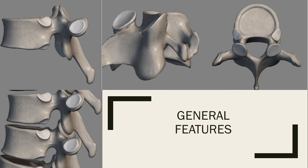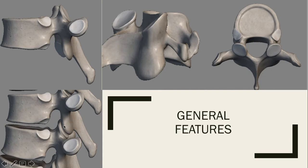Now the superior vertebral notch — just like the inferior, we have the superior vertebral notch. If you were just to isolate it, it's just this little section here. And then we have the intervertebral foramen. You can't identify this with just a singular isolated bone because all we can see is the notch — there's actually no foramen. But when you connect the two, when they're stacked on top of each other, the inferior vertebral notch and the superior vertebral notch come together and form this intervertebral foramen.